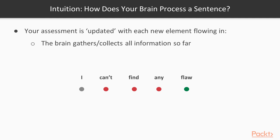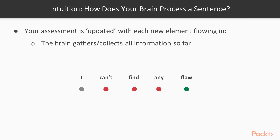Now the last word is 'flaw.' Interestingly, 'flaw' by itself is a negative word, but when read in the context of the other words the whole sentence becomes positive. Up to the previous word the sentence carried a negative sentiment, but now all of a sudden it becomes positive because it says 'I can't find any flaw.' Situations like this, where sequence matters, are where we need to use RNN.